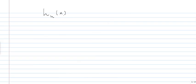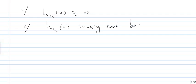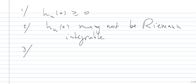So what are the properties of HN? First, HN(x) is positive. Second, HN(x) may not be Riemann-integrable — so we lost that property. Third, it is clear that HN+1 is less than HN, because we are taking the supremum over a smaller set. So it is decreasing.